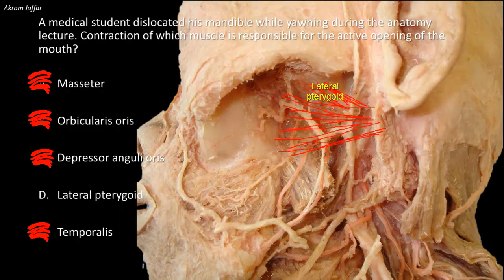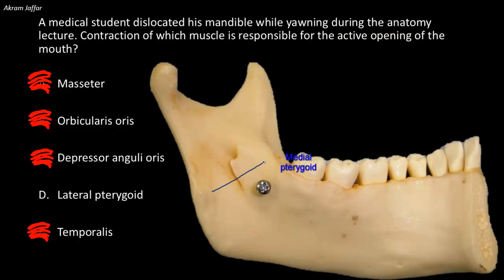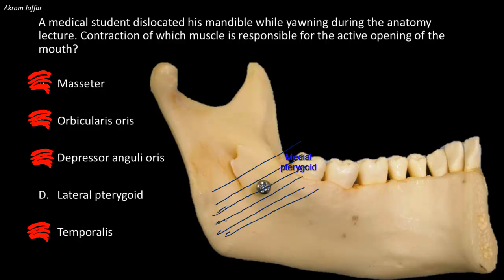Here we can see the medial pterygoid, the fourth and last muscle of mastication. Most of it arises from behind the lateral pterygoid — specifically from the medial aspect of the lateral pterygoid plate and from the tubercle of the maxillary bone. Its fibers attach to the inside of the angle of the mandible, just opposite to the masseter, which attaches to the outside. The medial pterygoid thus closes the mouth, and when acting on one side, it moves the mandible to the opposite side, producing the side-to-side movement needed in chewing.